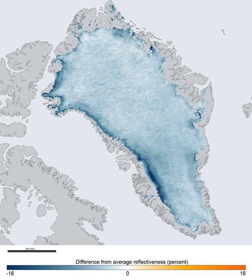When the meltwater seeps down through cracks in the sheet, it accelerates the melting and, in some areas, allows the ice to slide more easily over the bedrock below, speeding its movement to the sea. Besides contributing to global sea level rise, the process adds fresh water to the ocean, which may disturb ocean circulation and thus regional climate.